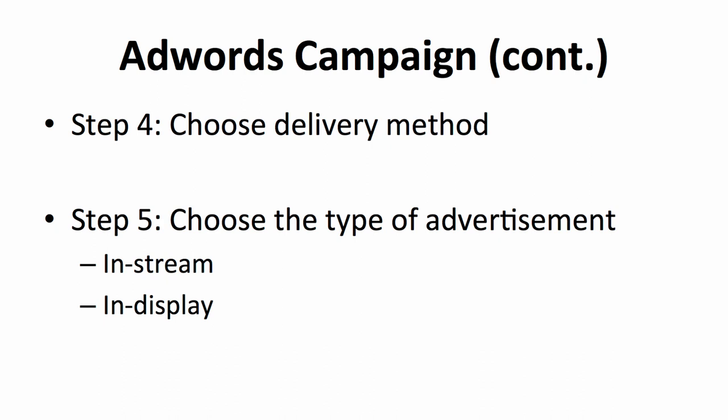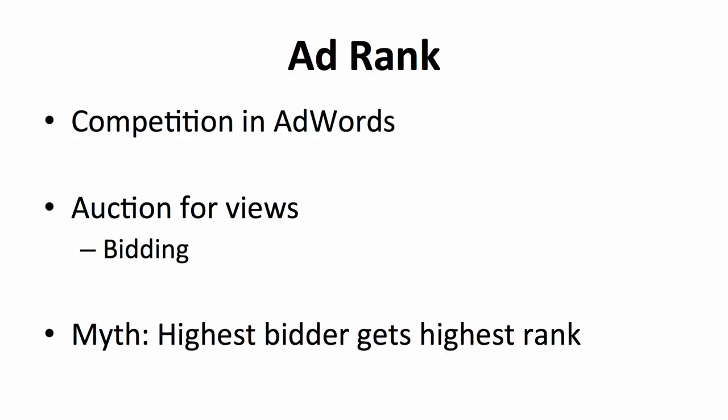The ultimate goal of bidding with keywords is to move your video to the top of the ad rank. The higher your rank, the better the exposure of your video. Ad rank is decided by Google to determine the placement of your video. One of the factors that affects your ad rank is the auction for views — how much you bid. Every user gets to choose how much to bid, but it's not solely based on the bid amount; there are other factors involved as well.